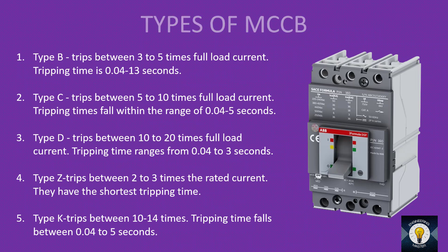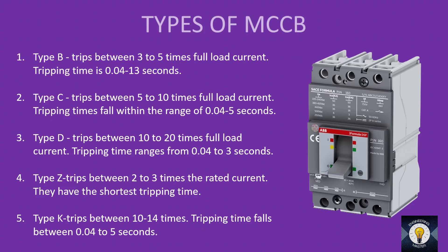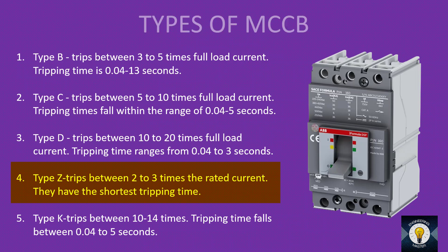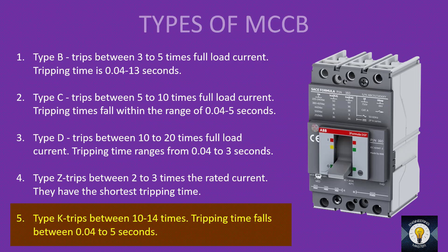The next step is selection of MCCB type. Like MCBs, MCCB is also available in five types. Type B trips between 3 to 5 times full load current with a tripping time of 0.04 to 13 seconds. Type C trips between 5 to 10 times full load current with a tripping time of 0.04 to 5 seconds. Type D trips between 10 to 20 times full load current with a tripping time of 0.04 to 3 seconds. Type Z trips between 2 to 3 times full load current and has the shortest tripping time. Type K trips between 10 to 14 times full load current with a tripping time of 0.04 to 5 seconds.